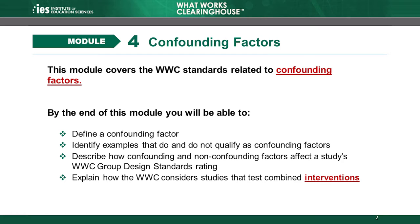In this module, we will first discuss how the WWC defines a confounding factor. In brief, confounding factors are study components that make it difficult or impossible to distinguish the effect of the intervention from the effect of that component. We will provide examples of confounding factors as well as examples of things that are not confounding factors. We will then discuss how confounding and non-confounding factors affect a study's rating. Finally, we will discuss how the WWC considers studies that test combined interventions.